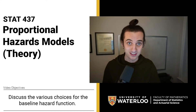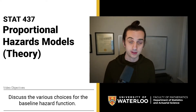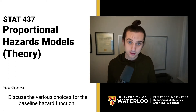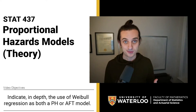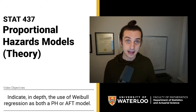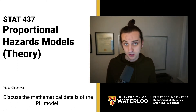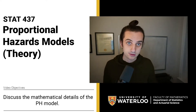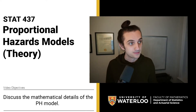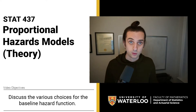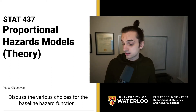Hello everyone and welcome to another Stat437 lecture video. In today's video we are going to be doing the theory for the proportional hazards models. In the last lecture we introduced what a proportional hazards model is. As a quick recap, what we're doing with proportional hazards models is looking directly at the hazard function as something we can model, modeling it in a way that depends on the linear predictors such that we can look at hazard ratios between two individuals that end up being proportional to one another. In today's lecture we're going to look at the mathematical details of those models.